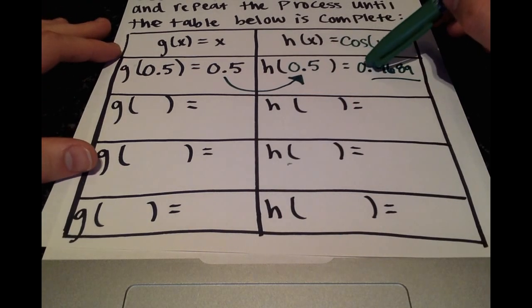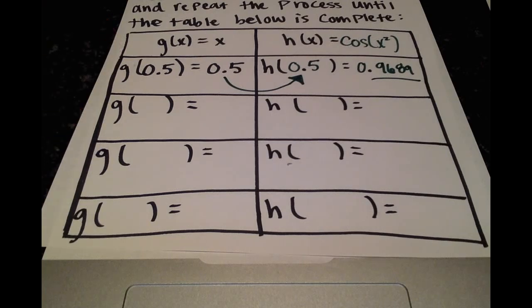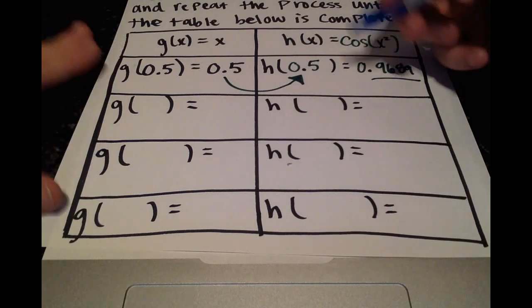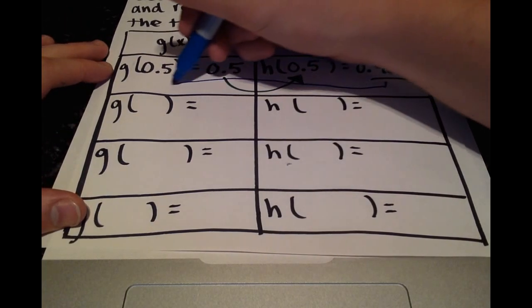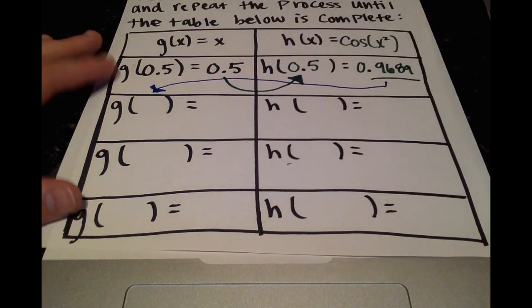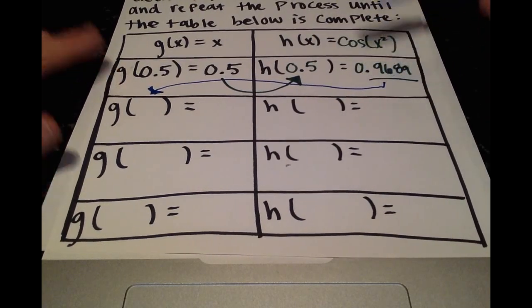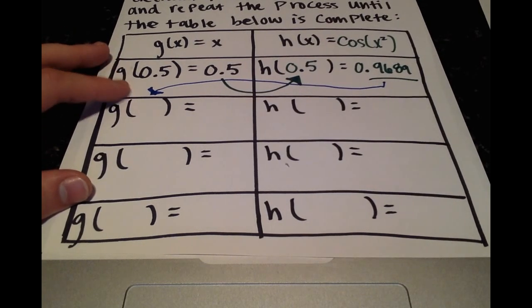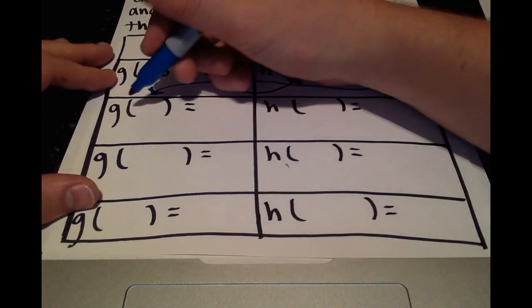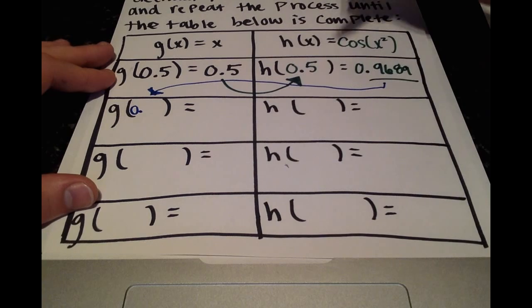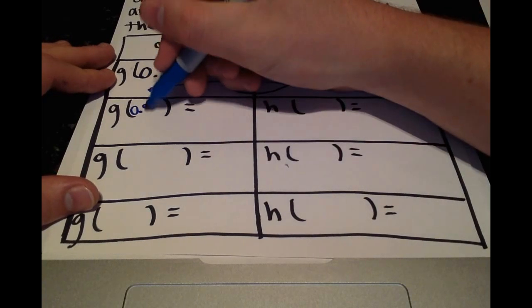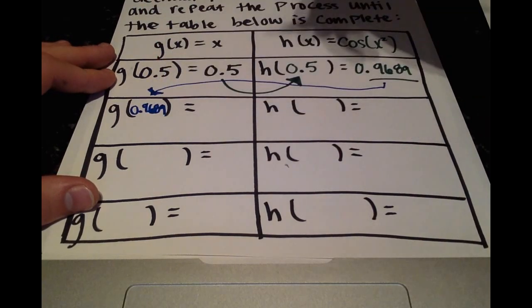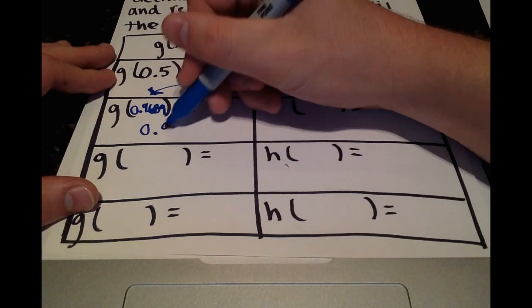Alright, so what we'll then do is plug this result into g of x. So the result of h of x will be plugged into g of x, the result of g of x will be plugged into h of x. And we'll continue this process.